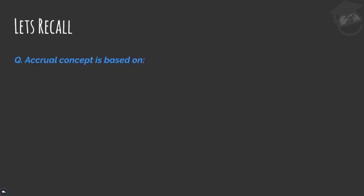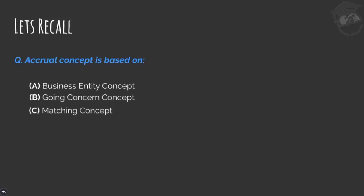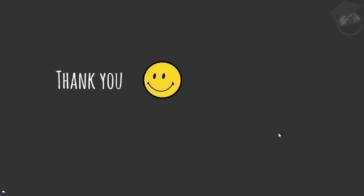Let's do a quick exercise: the accrual concept is based on — option A: business entity concept, option B: going concern concept, option C: matching concept, option D: none of the above. These two concepts were taught in the last session so you can go back and revise. I will be waiting for your answers in the comment section. Stay tuned for the leftover concepts and I will see you in the next session. Thank you.